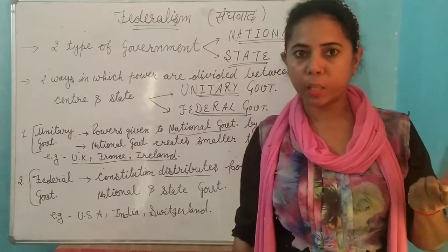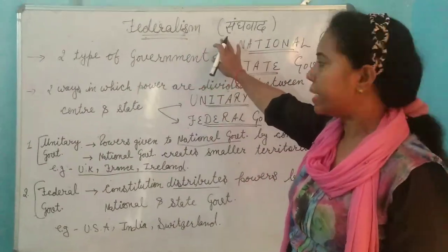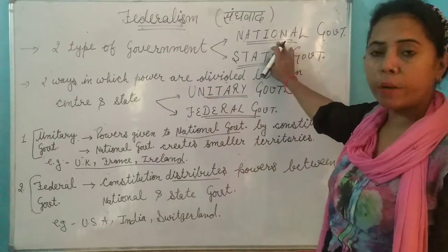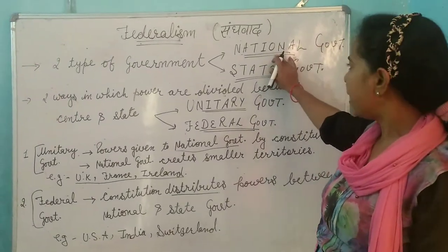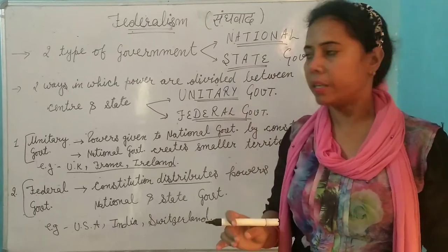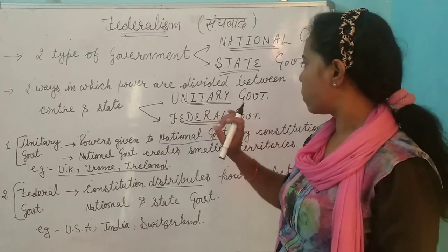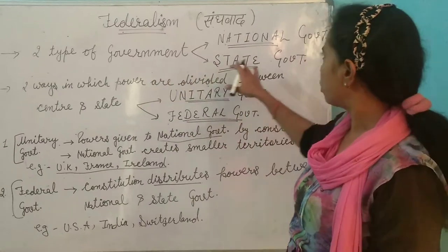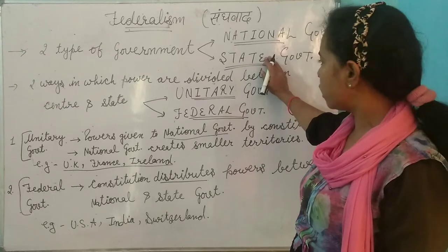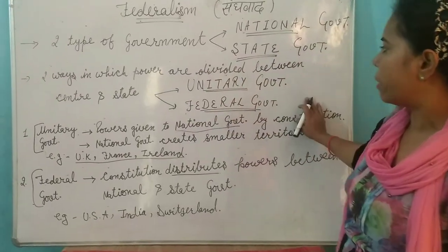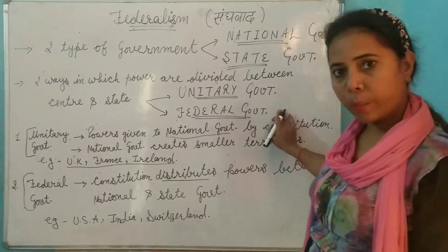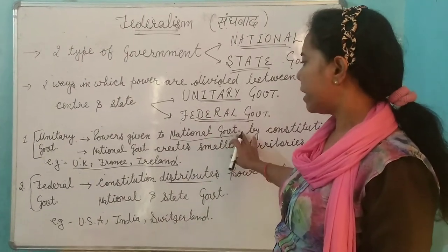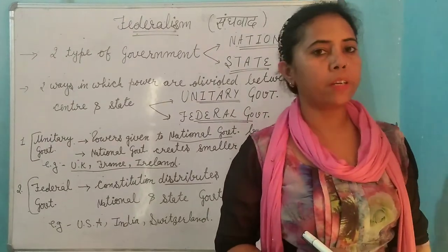Ek baar main-main points sunta lete hain. Aaj humne padha federalism ke baare mein, that is Sanghavad. Do type ki government hoti hai: national government jo center level par kaam karti hai, jise kendriya sarkar bhi kehte hain, and state government. Powers ka distribution national level aur state level par kaise hota hai — yeh hum in governments ke through jaante hain: unitary government aur federal government. Unitary government mein saari power constitution dwara national government ko di jaati hai, aur federal system mein power ka distribution hota hai between state and national government.